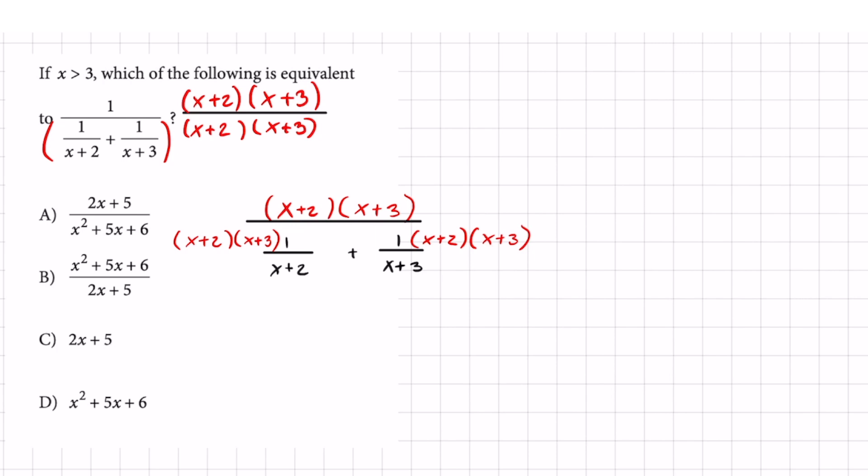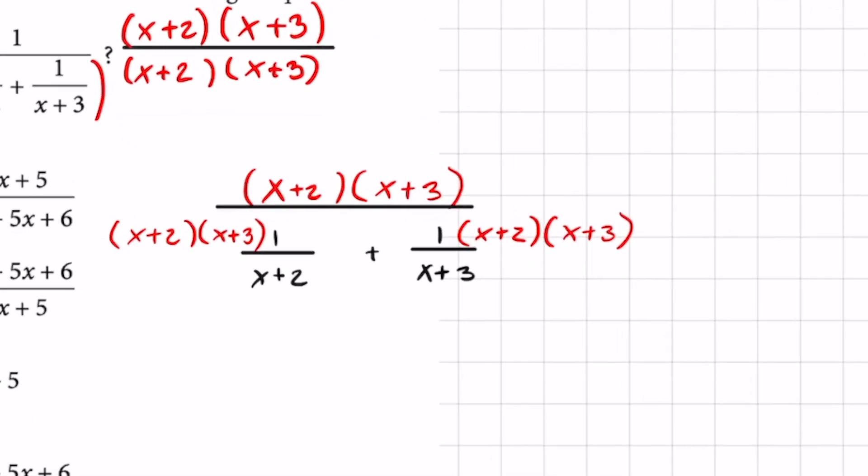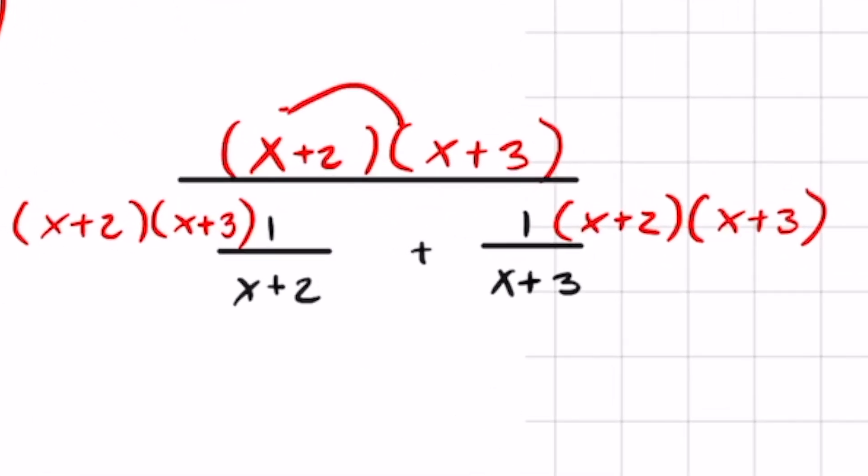It looks a little messy but I promise you we're going to end up cleaning this up. On the top you're going to end up distributing this part right here. So that's going to end up being x squared plus 5x plus 6 on the numerator.